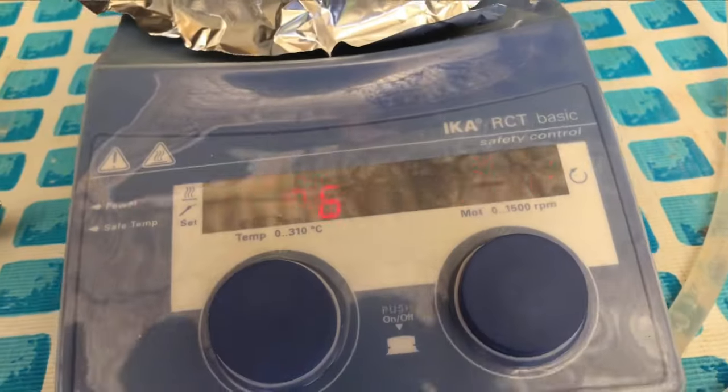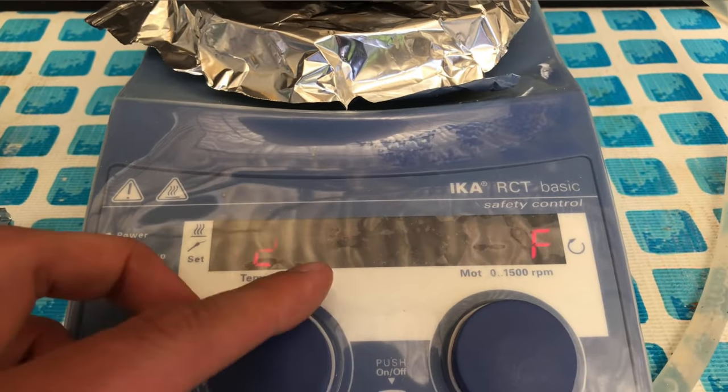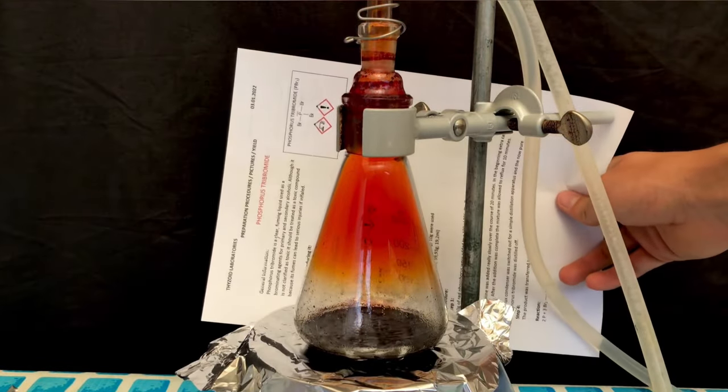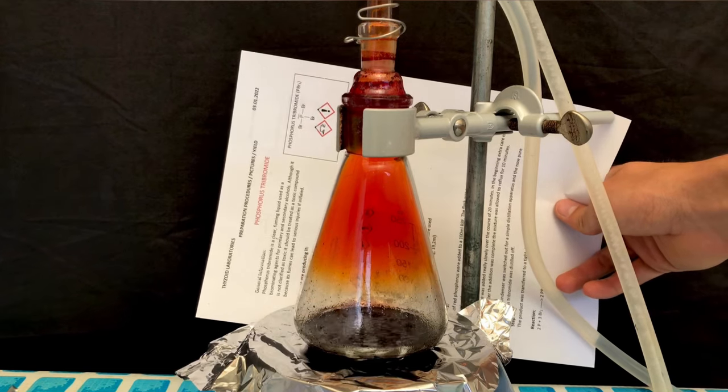To make it cool back down to room temperature even faster, all aluminum foil was removed. As you can see here, there's still bromine vapor left in the flask, but as there's also phosphorus, this doesn't matter.